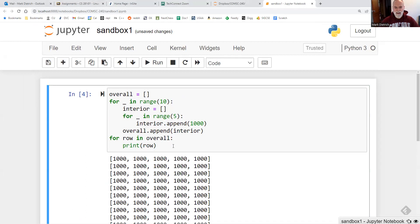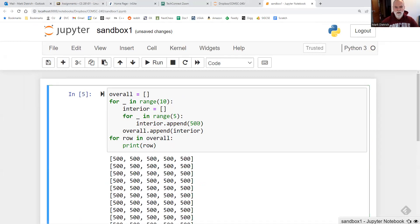It's going to populate a 10 row, five column, two-dimensional list, all with the value a thousand. If we wanted to replace this value with something else, let's say 500, we just simply replace that. And there's our 2D list of 500s.